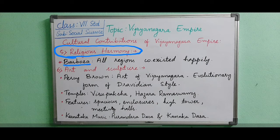Barbosa visited and was impressed with the religious harmony. He stated that Hindus, Jewish Christians, and all persons were living happily in the Vijayanagara kingdom. He said these kings respected all religions. This is the statement given by Barbosa.